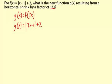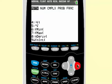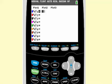So now we're going to graph and compare. So our f of x is absolute value of x minus 1 and then plus 2.